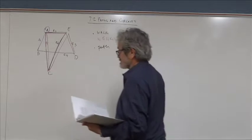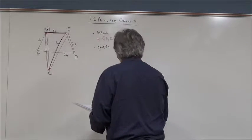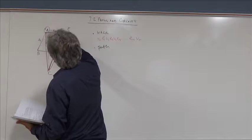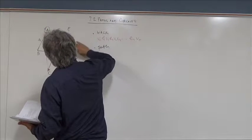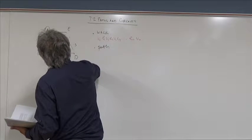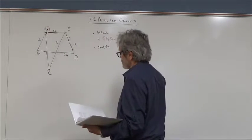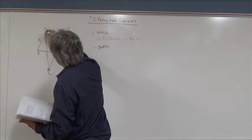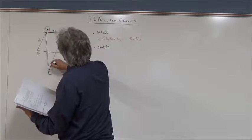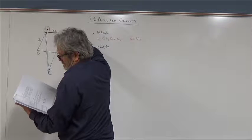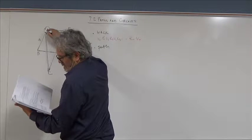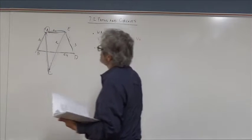A walk becomes a path if we cannot traverse the same edge twice. For example, starting at A: take E5 to C, then E6 to E, then E2 to A, then E1 to B. That sequence, which does not repeat any edge, is a path.